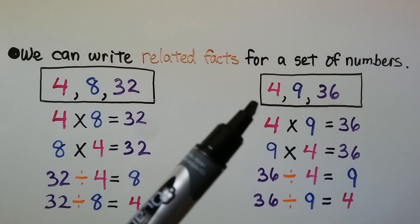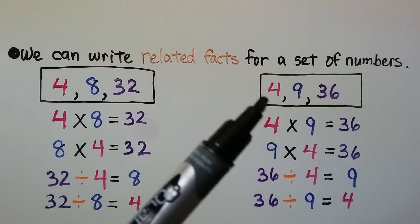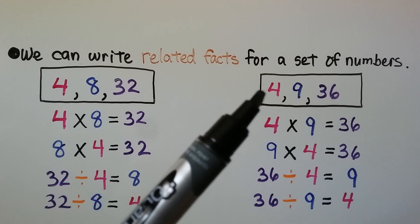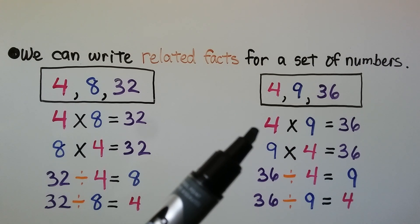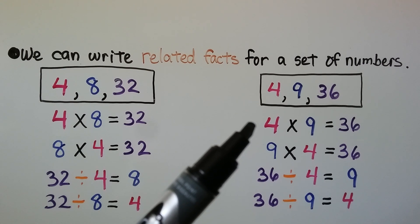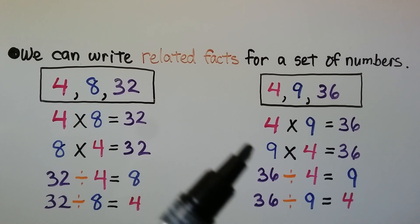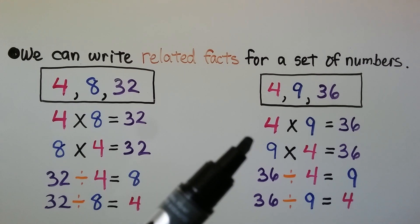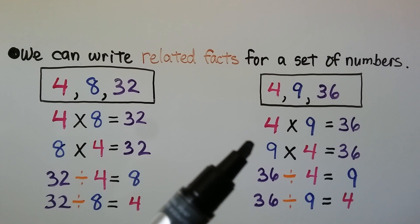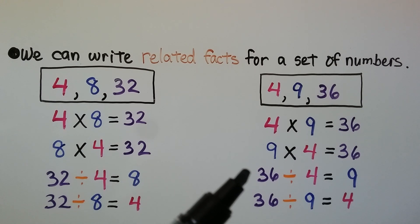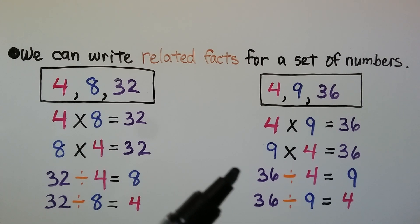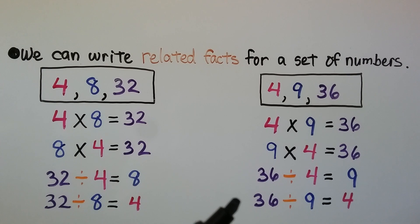We have 4, 9, and 36. We can write: 4 times 9 is equal to 36; 9 times 4 is equal to 36; 36 divided by 4 is equal to 9; and 36 divided by 9 is equal to 4.